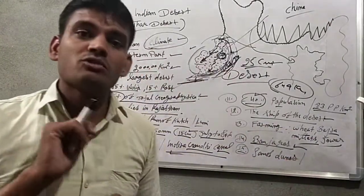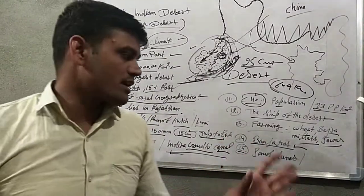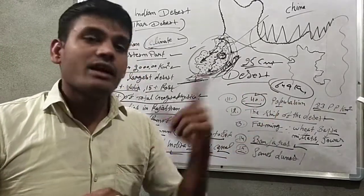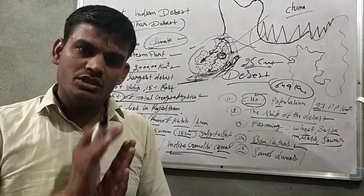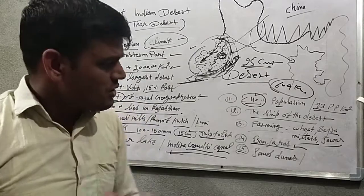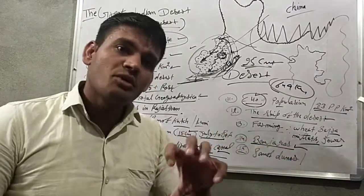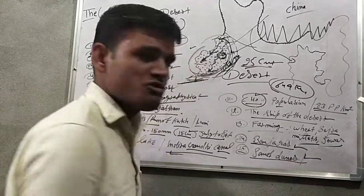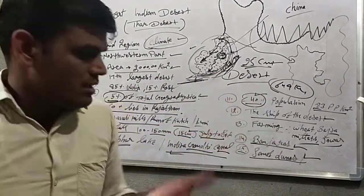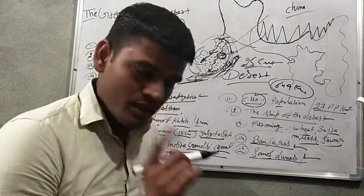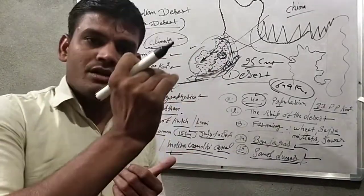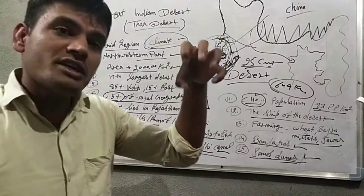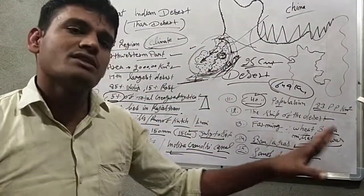The Banjara community lives in these areas. In this particular community, Gujjar-Bakarwal people also live — they are found in the Himalayas region, Uttarakhand, and Himachal Pradesh as well. Sand dunes are also seen here — sand dunes mean hills of sand.